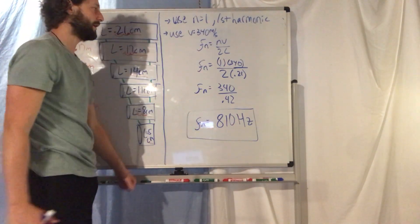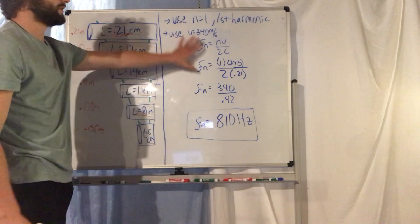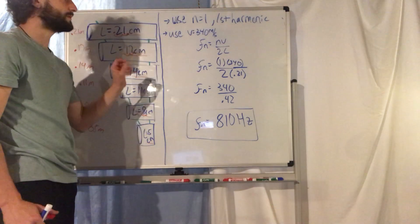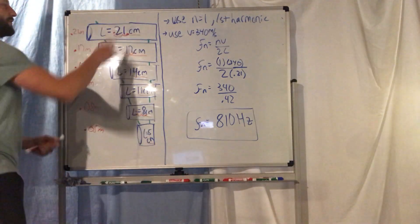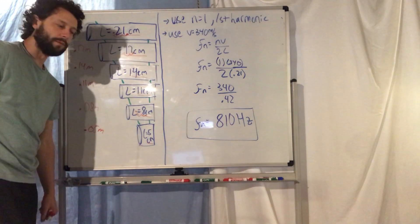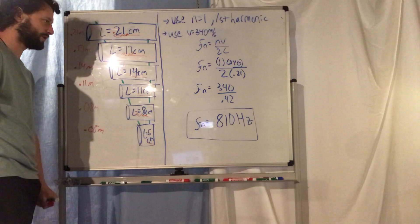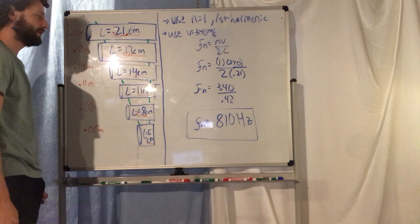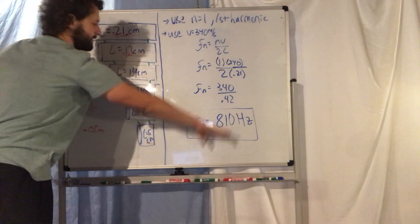So if you get a frequency that is something like 50 Hertz or point something Hertz, you did something wrong. They're all gonna be big numbers for Hertz. Now you have to do this calculation six times, once for each tube on a piece of notebook paper and submit that with a picture on canvas.